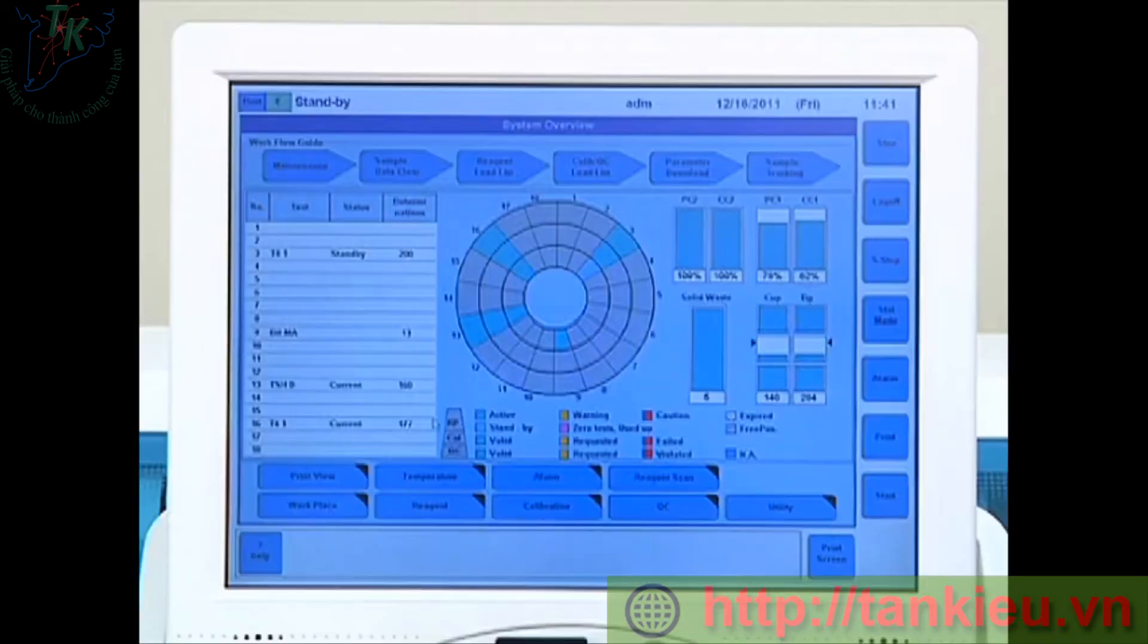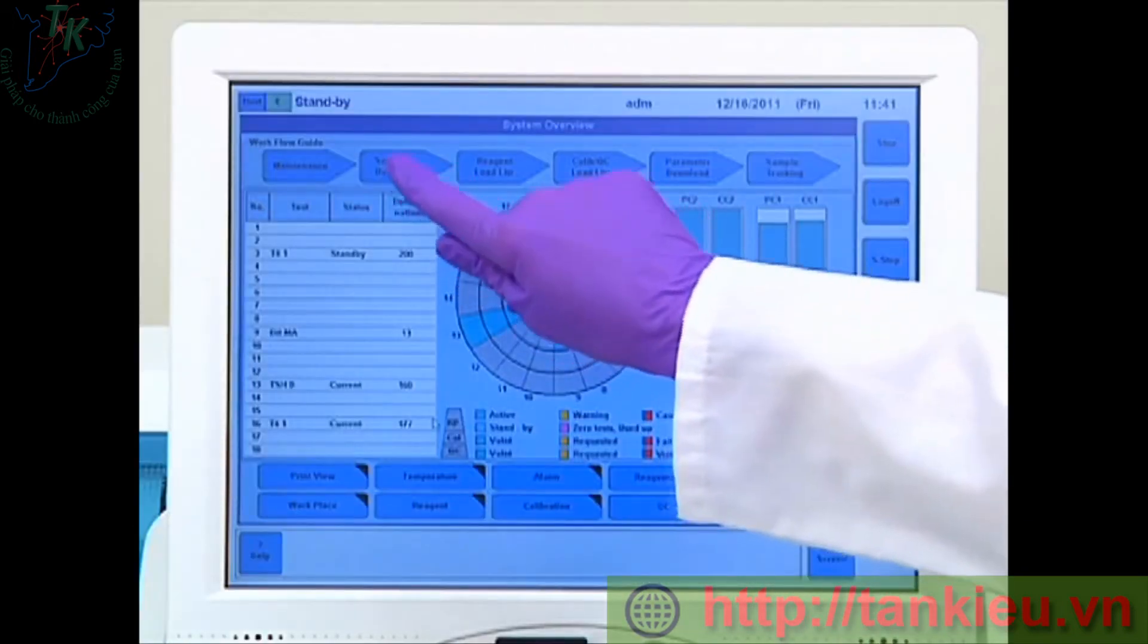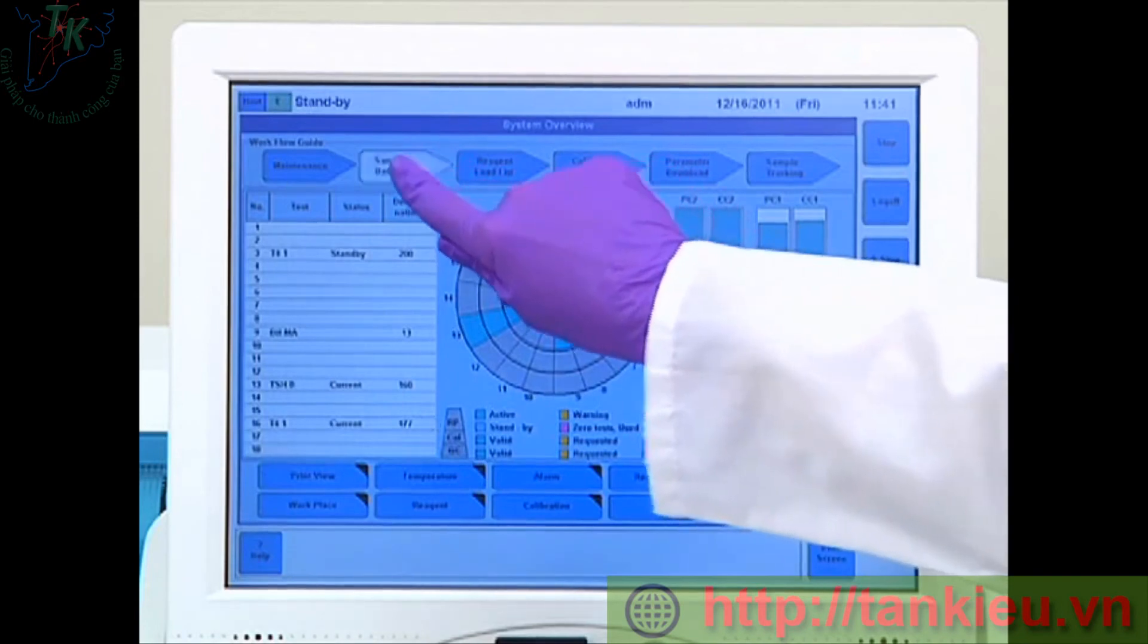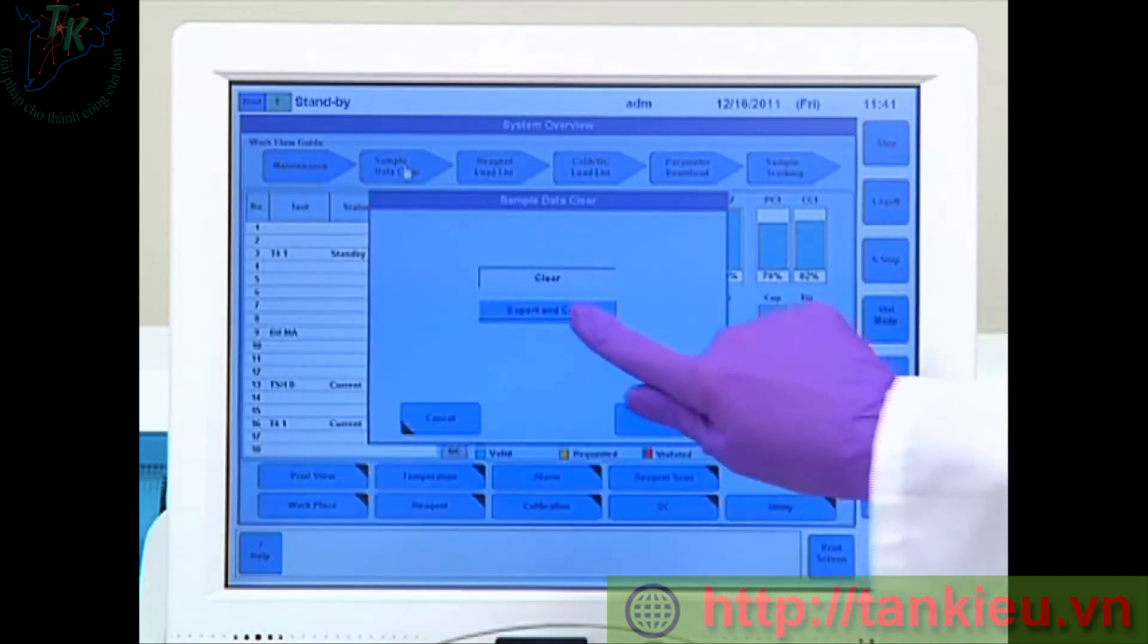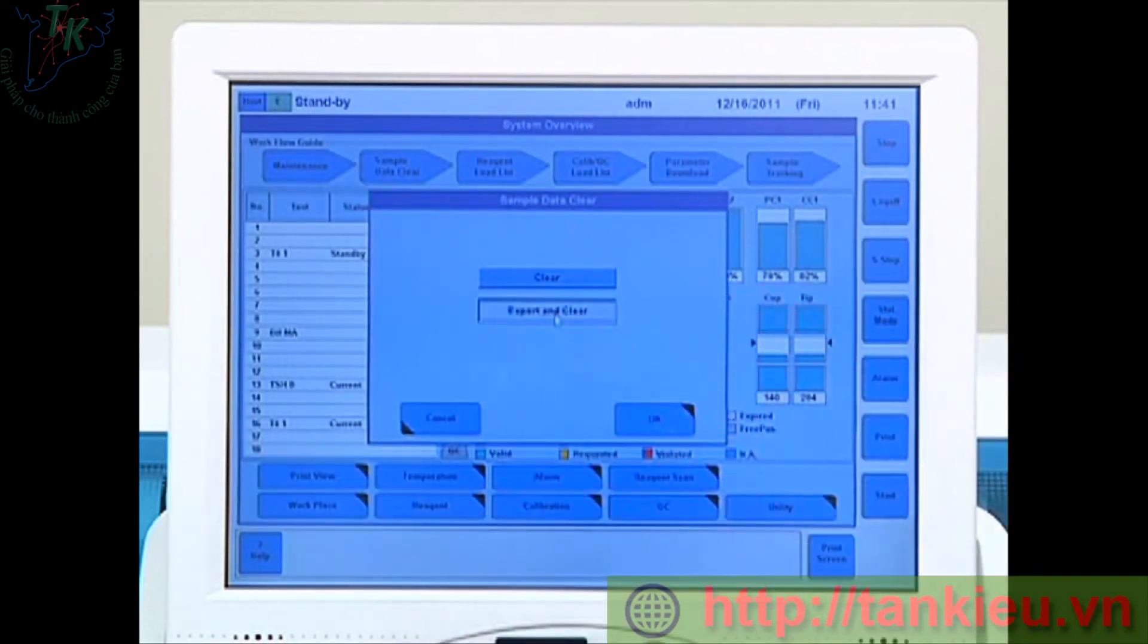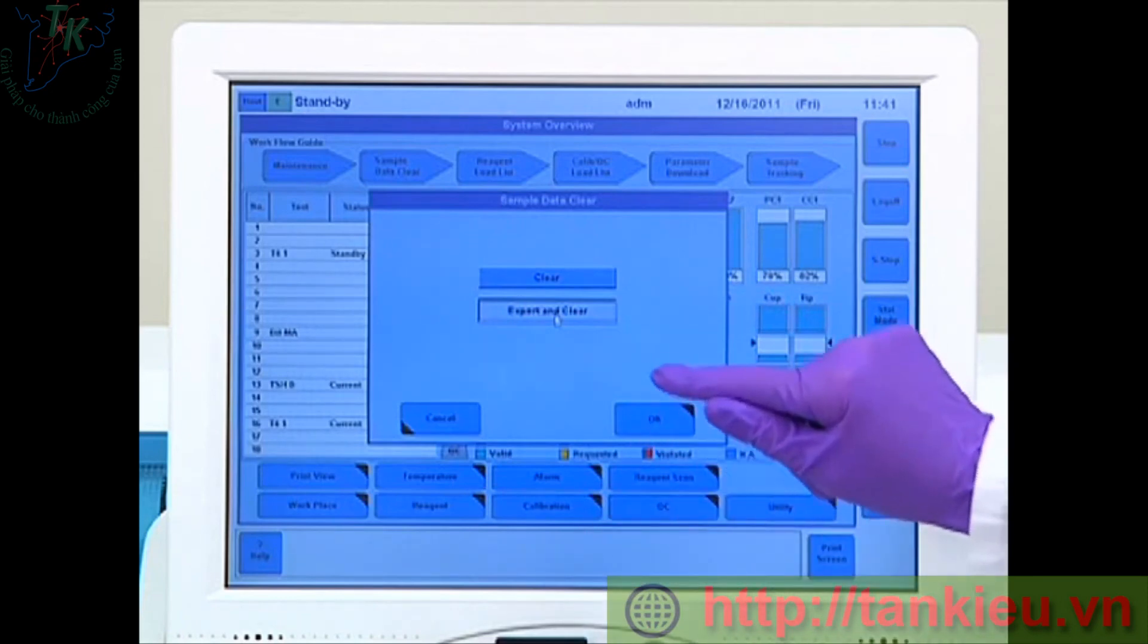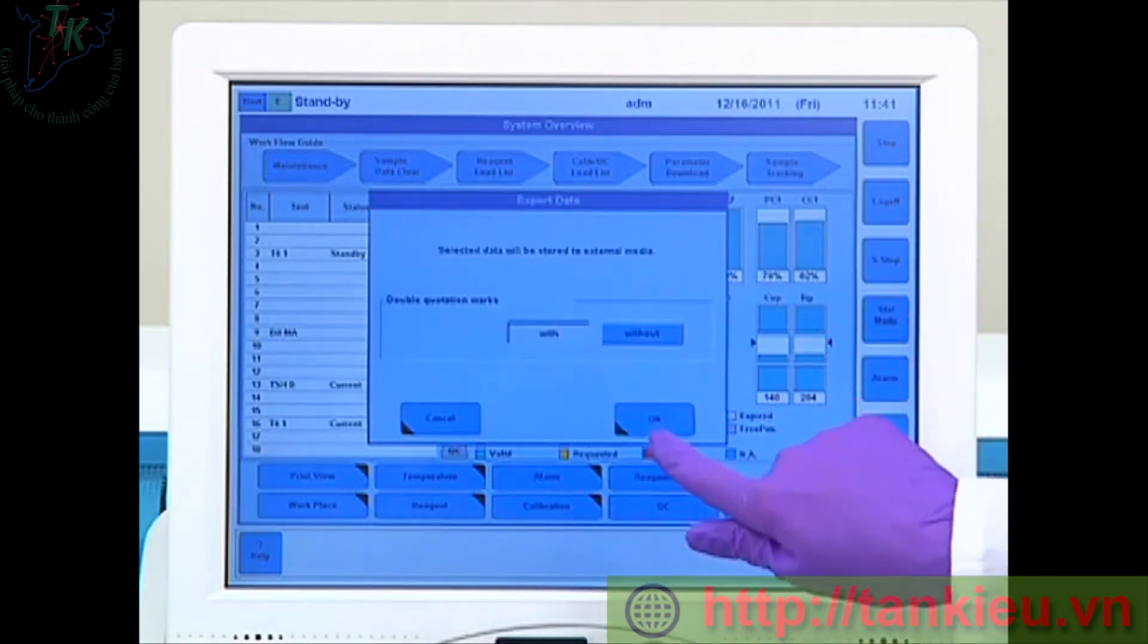Now I'm ready to prepare my calibrators and QC. Before I do that, I'm going to perform a sample data clear through the system overview screen. What this will allow me to do is to actually export my data to a DVD so that I would be able to retrieve it on another computer. So after I have selected the sample data clear and backed up my data, I'm ready to determine what reagents may need calibration.